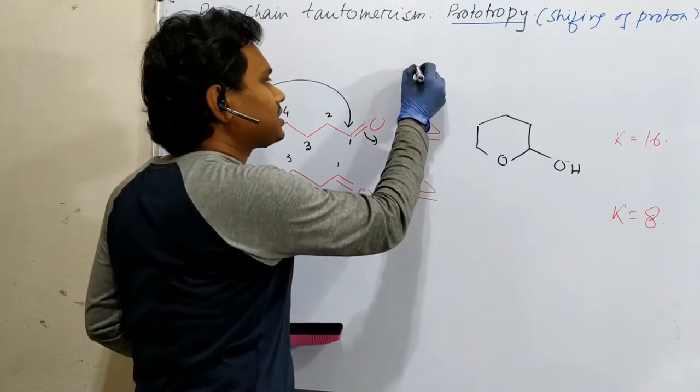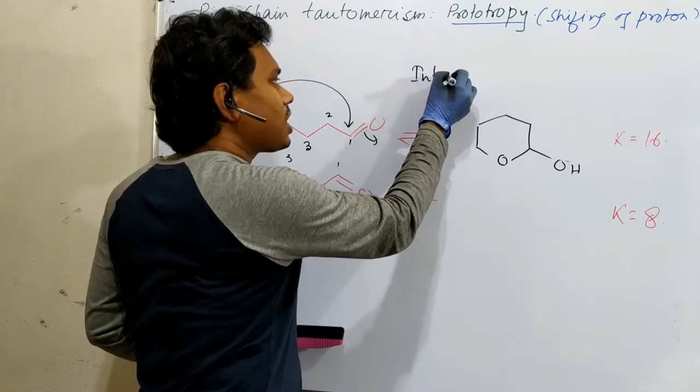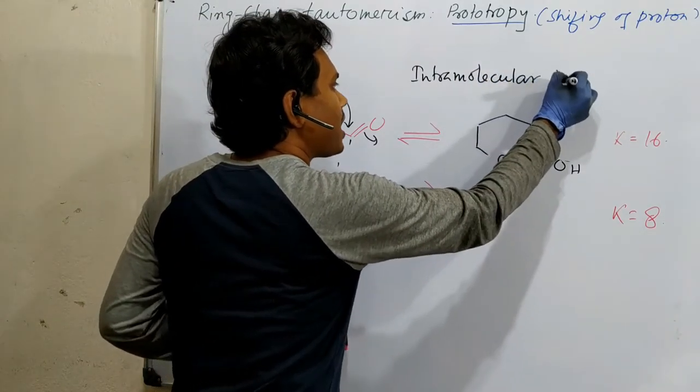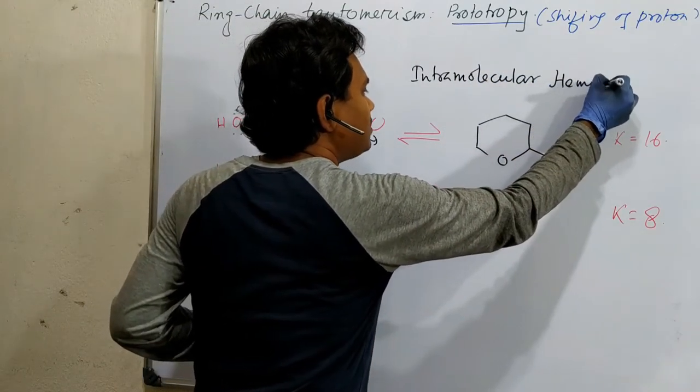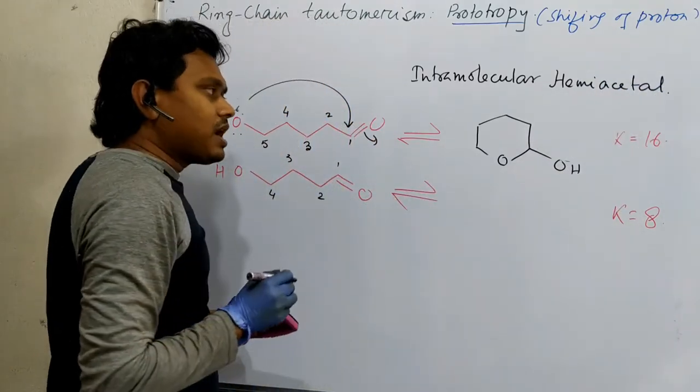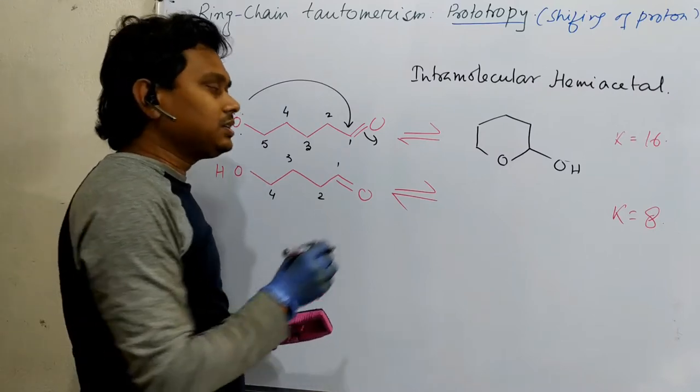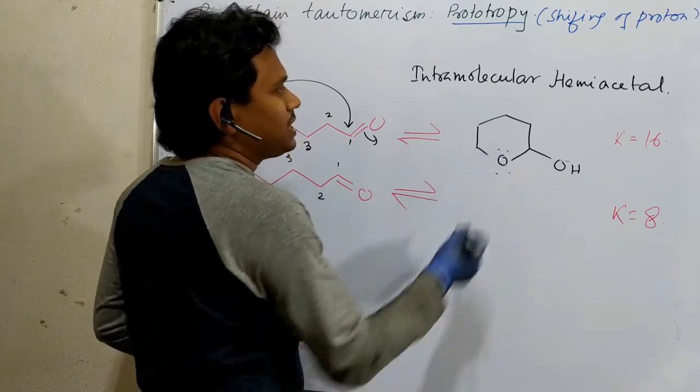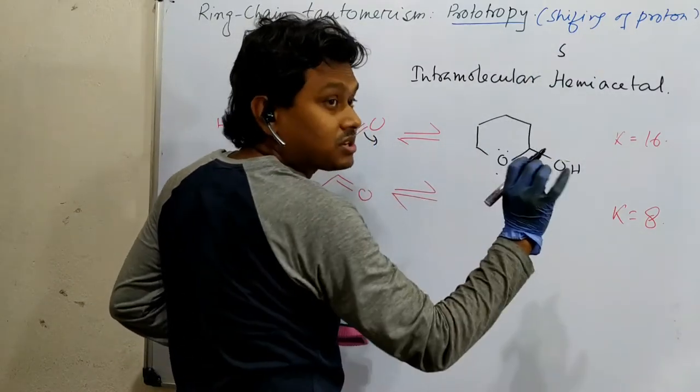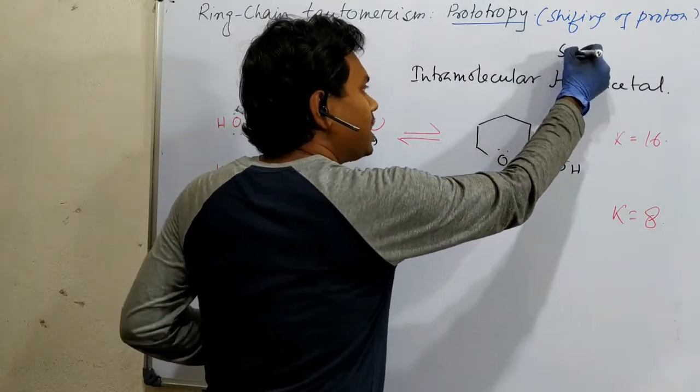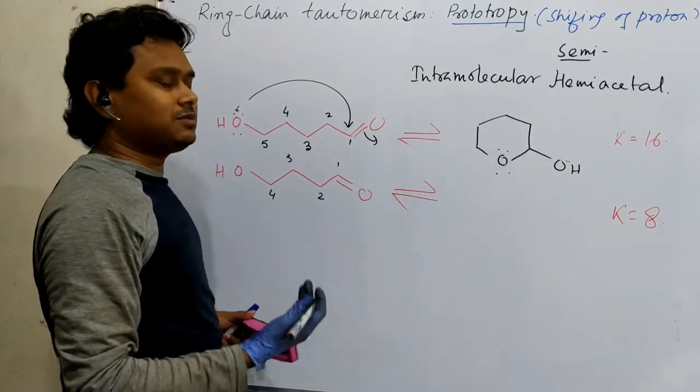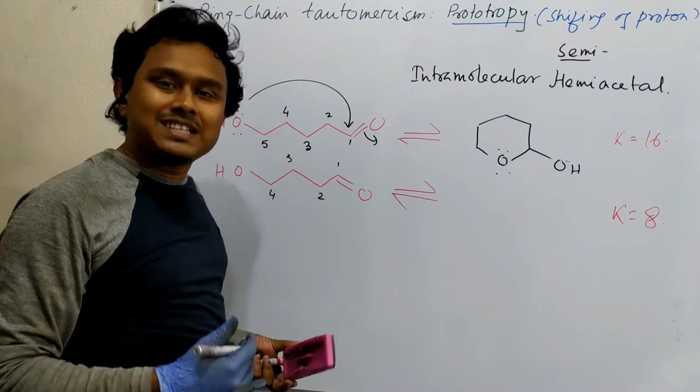So, this is, the term is, intramolecular hemiacetal. I have also discussed about hemiacetal and acetals previously. If you have any difficulty in understanding, please watch those videos. So, this is hemiacetal or you can say semiacetal. This name is not correct, this semi word is not correct. But for your understanding, you can keep this thing in mind. It is a semi, semiacetal. It is not completely acetal. It is a half acetal.